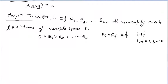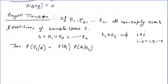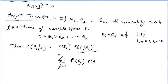Then the probability of any event Ei given A equals: probability of Ei multiplied by probability of A given Ei, divided by the summation from j=1 to n of probability of Ej into probability of A given Ej. This is Bayes theorem.